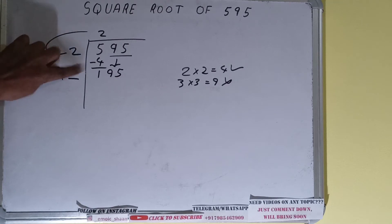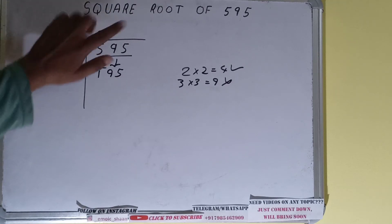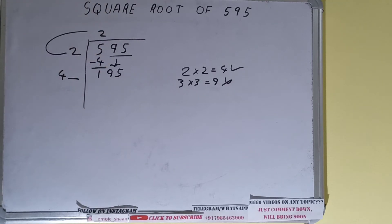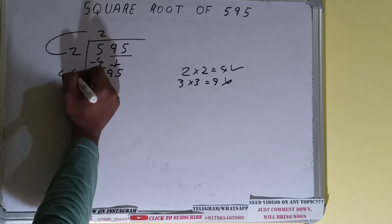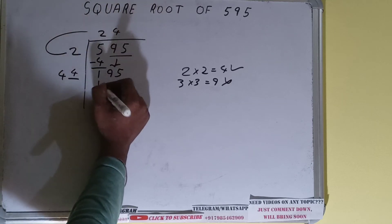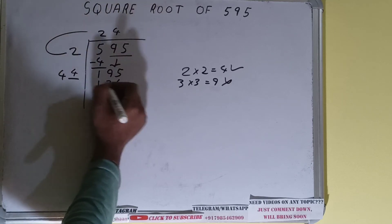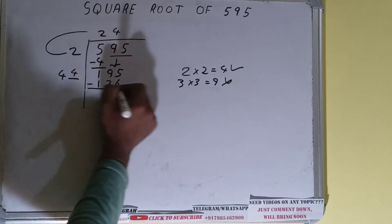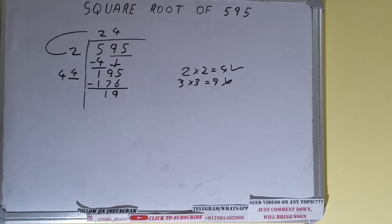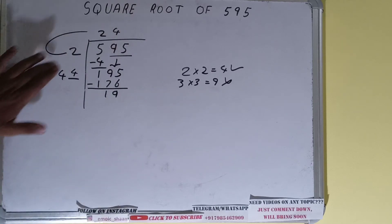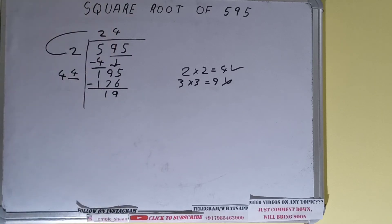Whatever number we write here we have to write here also. If we write four here and four here it will be 176, and on subtracting 19 will be left. We did 44 times 4, so add both: 44 plus 4 will be 48.